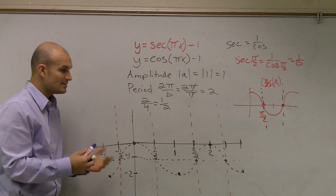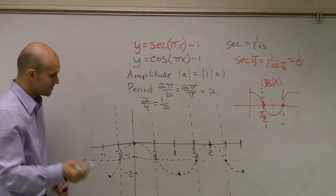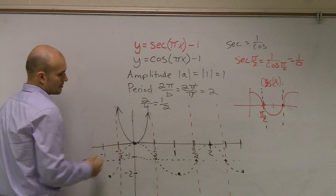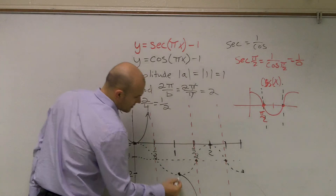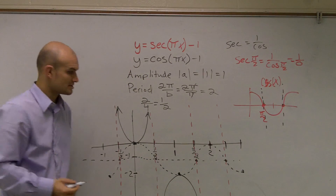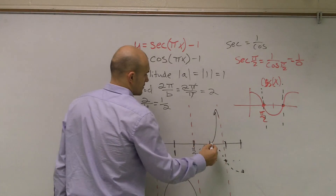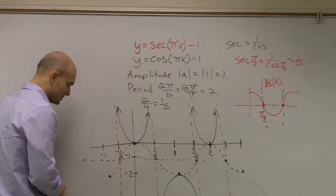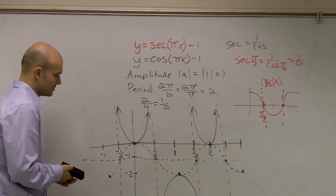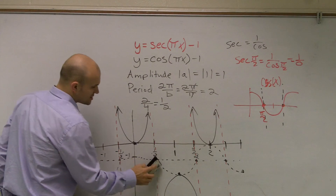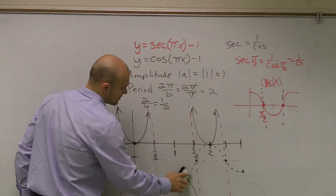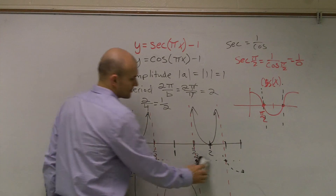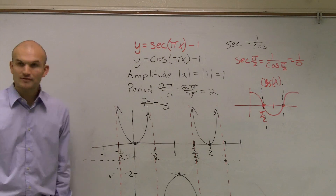Now we take our reflection points — the maximum and minimum of the cosine graph — and reflect them upward or outward from the asymptotes to form the secant curves. Then we can simply erase our cosine graph, because we don't really need it anymore. It was just used to help us find where the intercepts were so we could draw the asymptotes. And there you have your final secant graph.